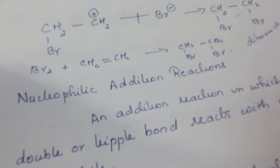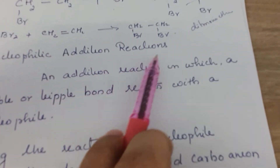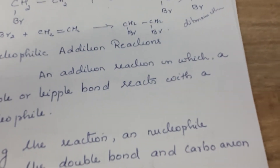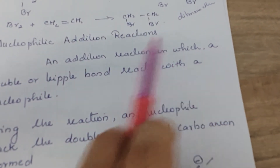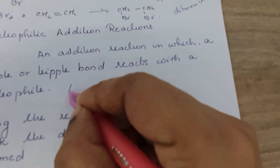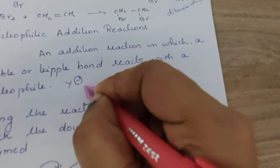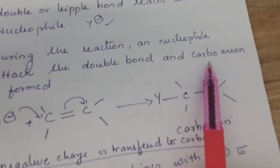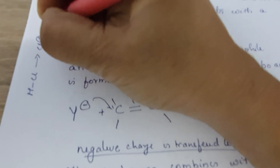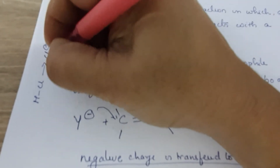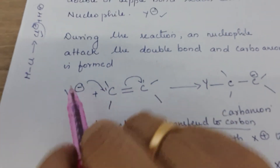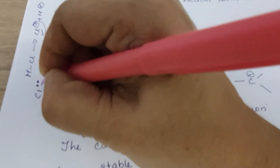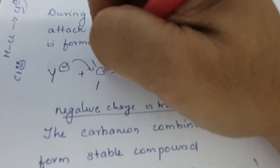The carbocation is stabilized and that completes the electrophilic addition reaction. Next is nucleophilic addition reaction. Here the attacking species is a nucleophile. An addition reaction in which a double or triple bond reacts with a nucleophile — a nucleophile being an electron-rich species — is nucleophilic addition. The nucleophile attacks the double bond and a carbanion is formed.